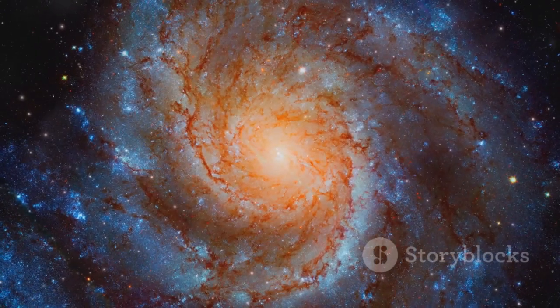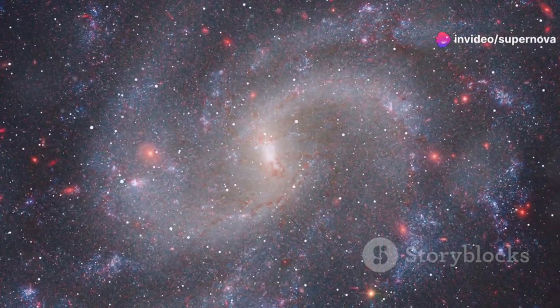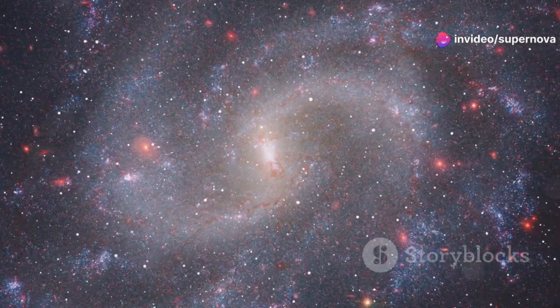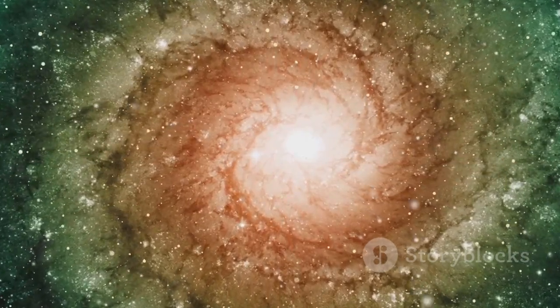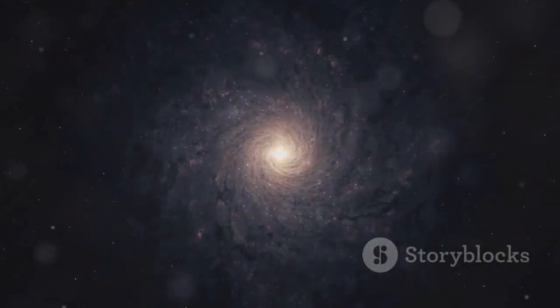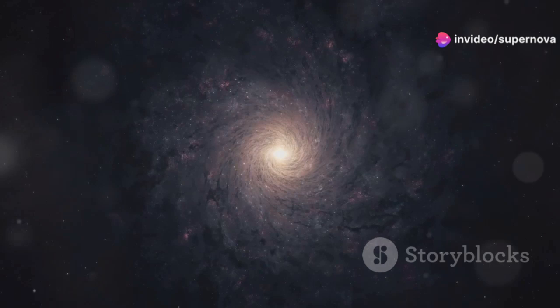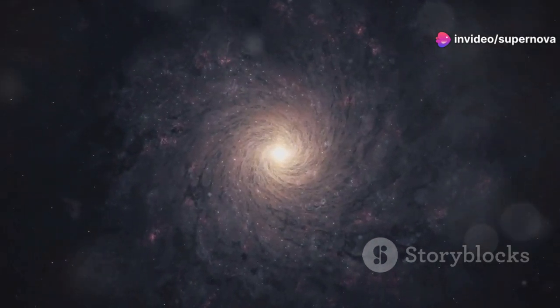Not all cosmic wonders are spooky. Some, like the Sunflower Galaxy, are simply breathtaking in their beauty. This spiral galaxy, also known as M63, gets its name from its resemblance to a sunflower in bloom. The Sunflower Galaxy's spiral arms are adorned with bright blue star-forming regions, giving it a vibrant and cheerful appearance. The Sunflower Galaxy is a reminder that the universe is full of beauty and wonder, from the smallest particles to the largest galaxies.